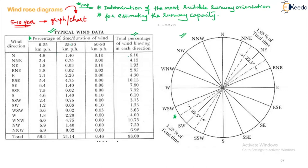In the north direction, the total percentage of wind blowing is shown, with 4.6% at one speed range, 1.4% at another, and 0.1% at another. For 5 to 10 years the data is collected, and for the north direction it covers 22.5 degrees to the right and 22.5 degrees to the left of north — that entire sector comes under the north division.